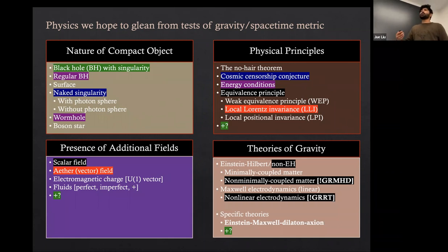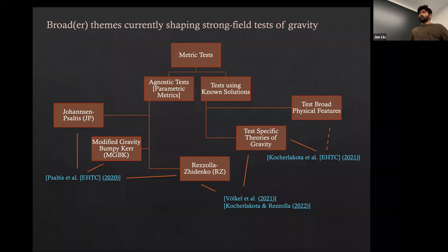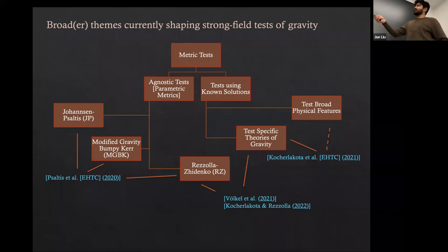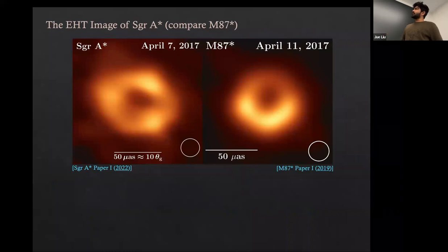There's another way to see the same thing thematically. On one hand, you pick a particular theory of gravity, find stationary solutions, ask what the images of those solutions look like, and compare with observations. On the other hand, you could agnostically deform the metric and ask what the constraint on these deformation parameters is. These are two broad themes. We now have EHT images of two astrophysical objects — a SANE state and a MAD state — both showing a characteristic central intensity depression.